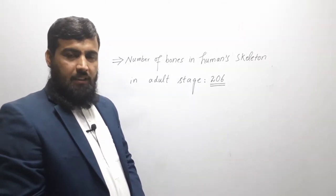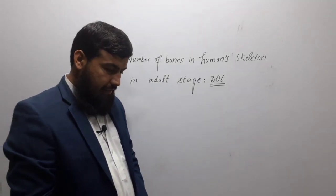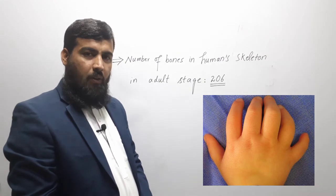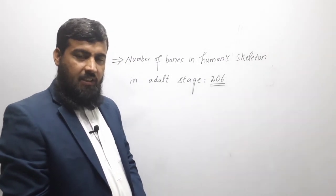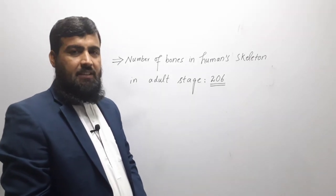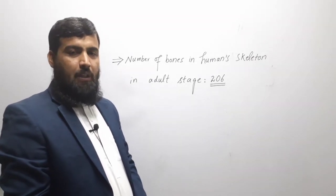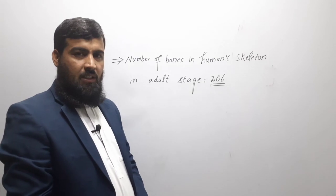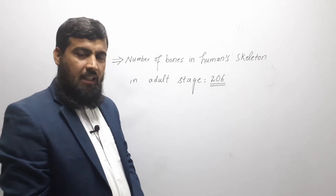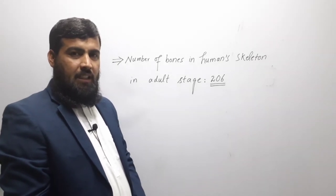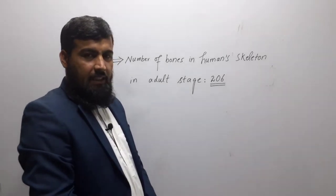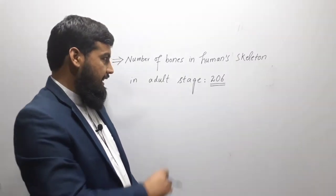Another example is that there are some individuals who have an extra digit. There are other regions in the human skeleton which vary from person to person. So from these examples it is clear that not all humans have 206 bones in their skeleton in the adult stage.